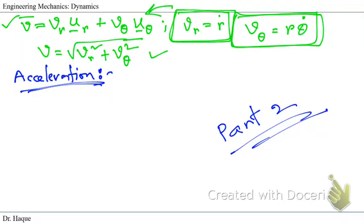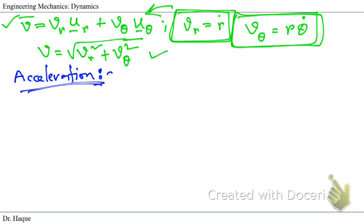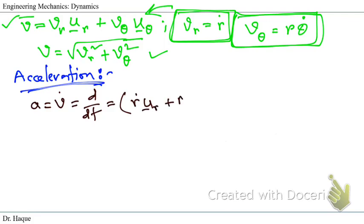Hello students, this is the second part of the video where we are working to find the polar velocity and acceleration components on a polar coordinate system. Let's find the acceleration components. By definition, acceleration a is given by the derivative of velocity V, so that is dV over dt. We just derived the velocity function: r-dot times unit vector u_r, plus r·θ-dot times the transverse direction unit vector u_θ. Now if we expand this derivative we see...